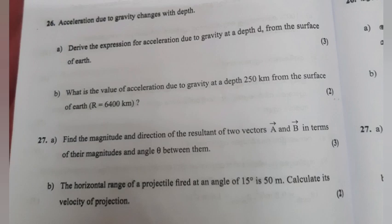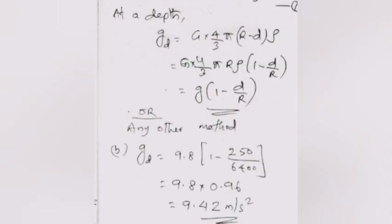At a depth D: g_D equals G into (4/3)π(R minus D)ρ, which equals G into (4/3)πRρ times (1 minus D/R), giving g_D equals g(1 minus D/R).